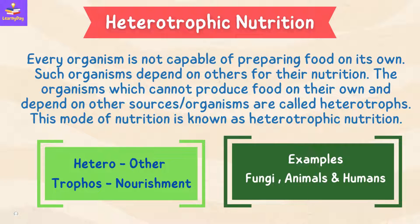Every organism is not capable of preparing food on its own. Such organisms depend on others for their nutrition. The organisms which cannot produce food on their own and depend on other sources or organisms are called heterotrophs, and this mode of nutrition is called heterotrophic nutrition. Hetero means other and trophos means nourishment. Examples are fungi, animals, and humans.